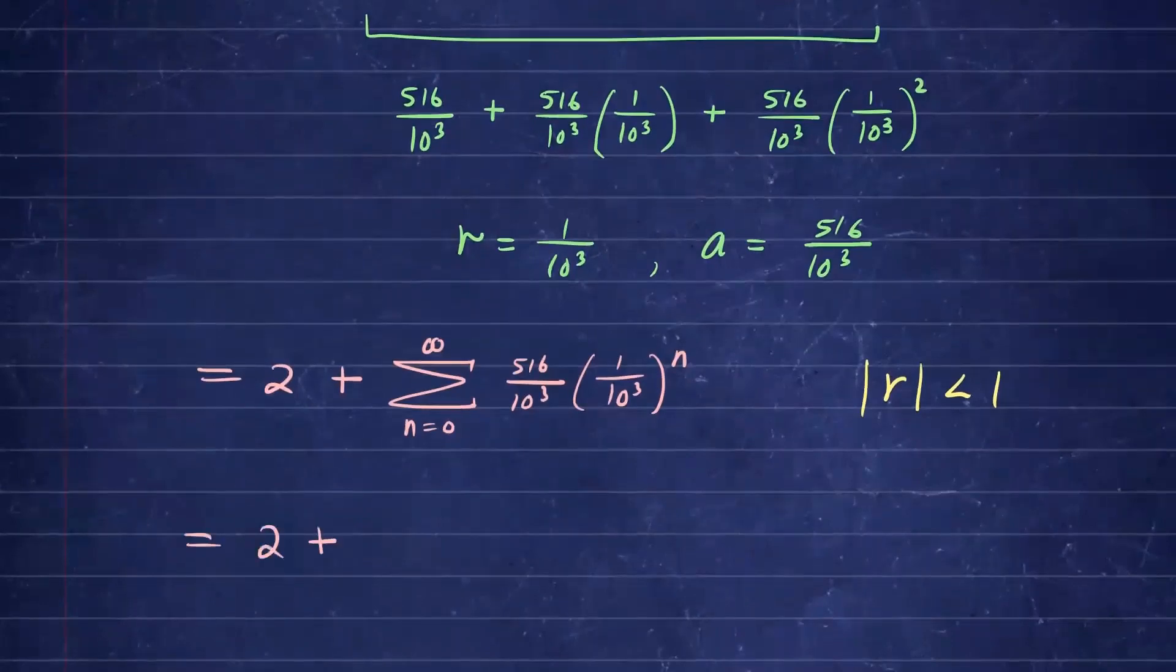So this will be 2 plus, this will converge to A over 1 minus R. So we're going to plug in our A and R value. So you will have the fraction. So A is 516 over 10 to the 3rd power, and we have 1 minus R. R happens to be 1 over 10 to the 3rd.